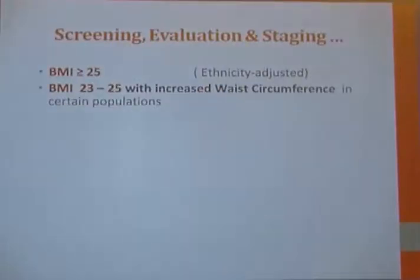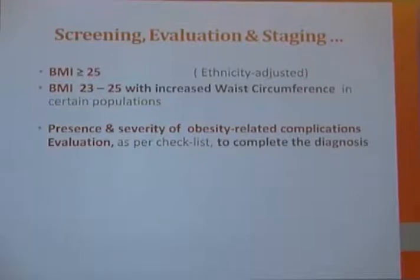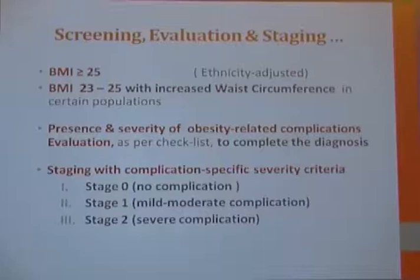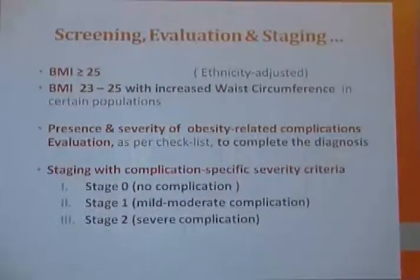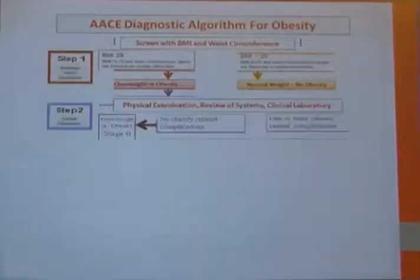Those with BMI more than 25 — with some ethnic adjustment — and ethnically adjusted criteria for groups like South Asians may also use waist circumference as a criterion. Presence and severity of obesity-related complications is very important to evaluate. Staging is 0, 1, and 2, depending on the level and severity of complications. In step one, screening is done with BMI and waist circumference.